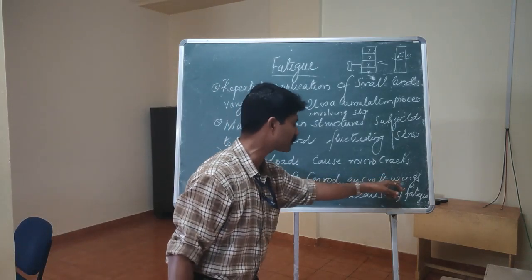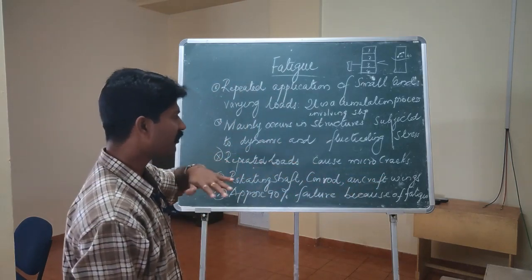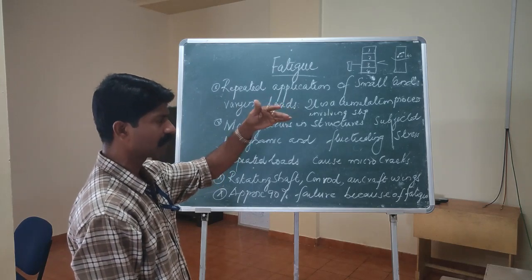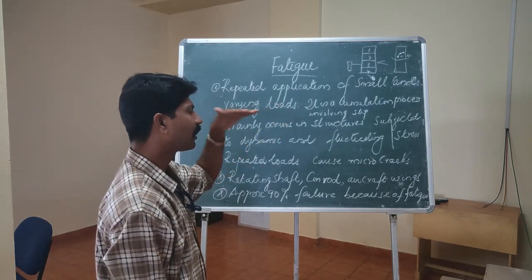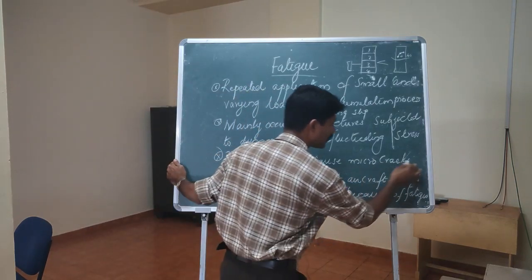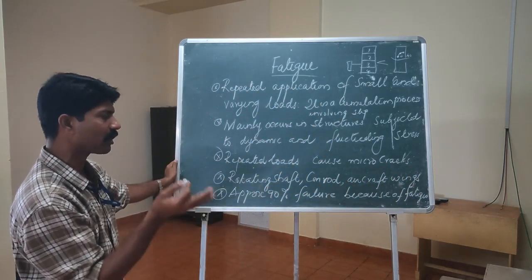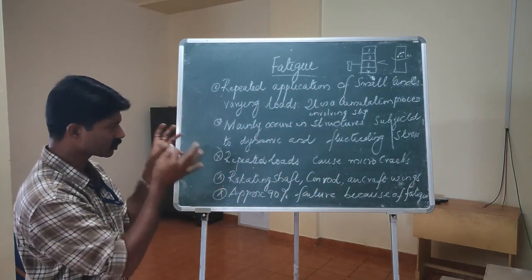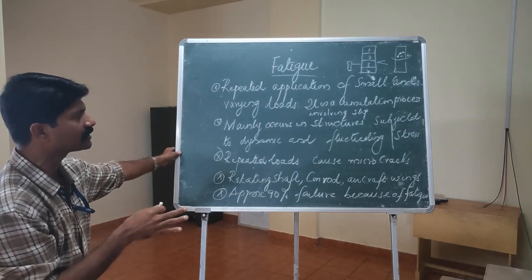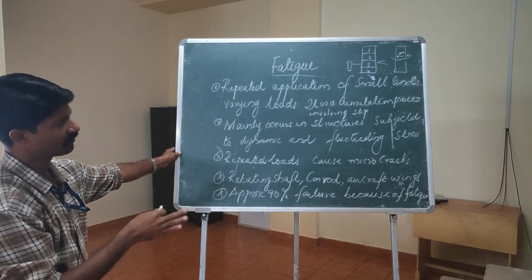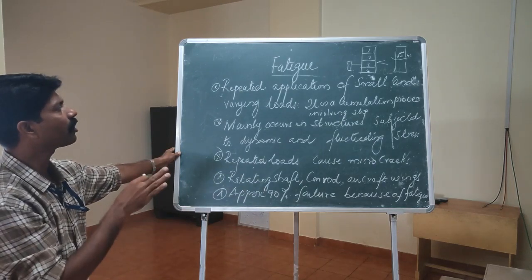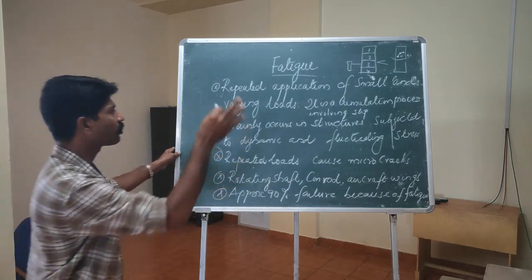Components prone to fatigue failure include rotating shafts, connecting rods, and aircraft wings. The resistance acting on an aircraft wing while moving is not constant, so these wings experience different cyclic loading. This cyclic loading on the aircraft wing subsequently promotes fatigue of that material. Fatigue is a major concern because 90% of rotating components and engineering materials fail due to fatigue.